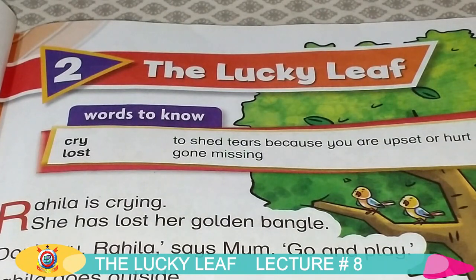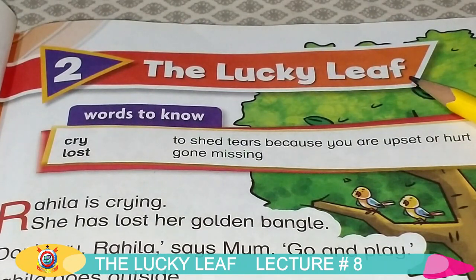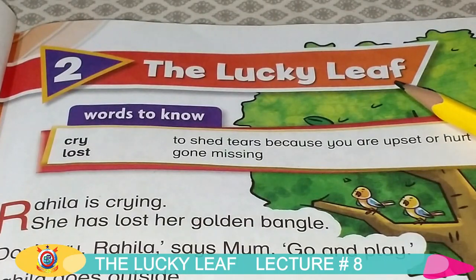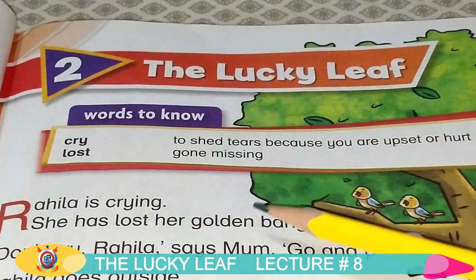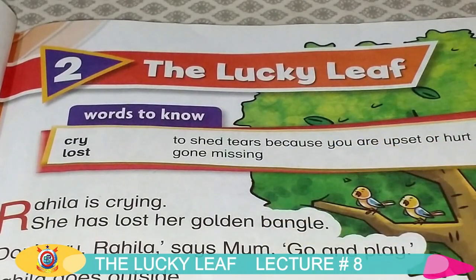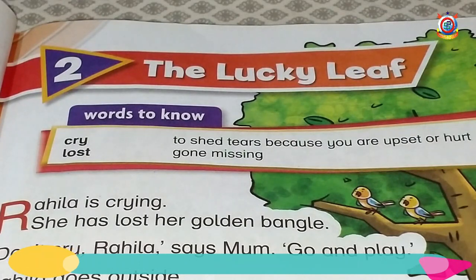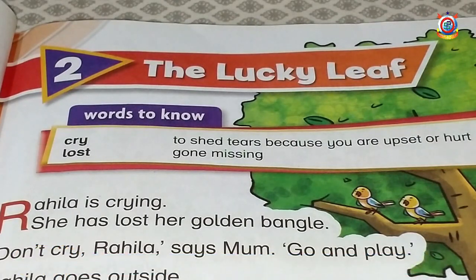Students, you all know that we are on Unit 2, and the name of Unit 2 is 'The Lucky Leaf.' This is the story about a girl whose name is Rahila. Let's recall the previous lecture — what happened to Rahila?